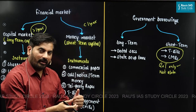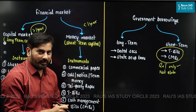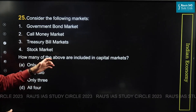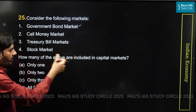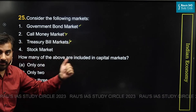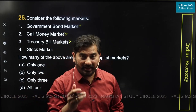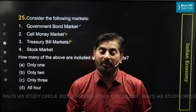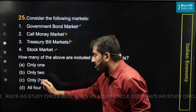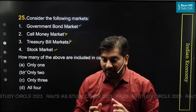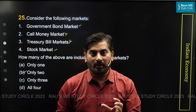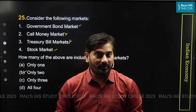Keeping this information in mind, let us solve the question asked in this year's prelims examination. The question requires us to identify which of the given markets are part of the capital market. We have discussed that the government bond market is part of the capital market. Call money and treasury bill markets are actually part of the money market. On the other hand, the stock market is a place where trading of capital market instruments takes place, so this option is also correct. Therefore, the right answer to this question is only two.